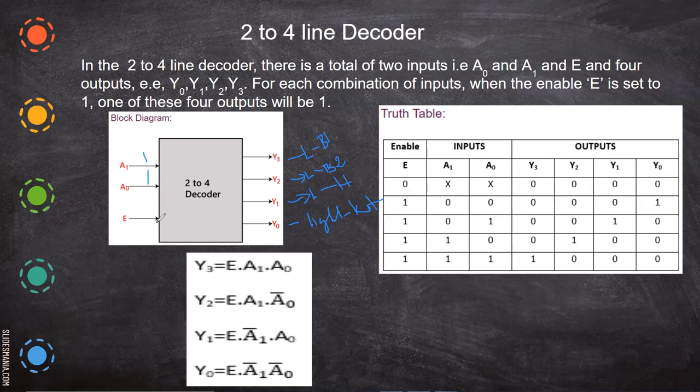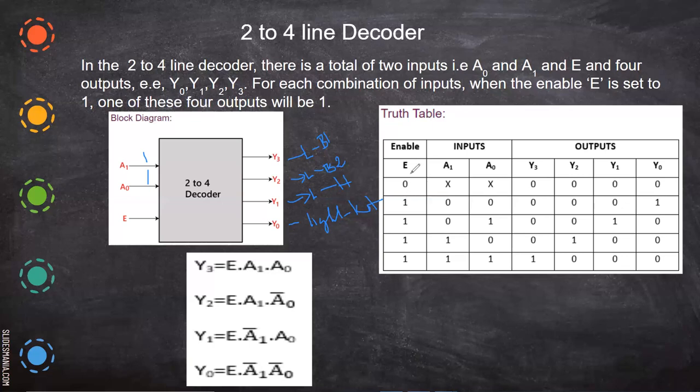So if you see the truth table, enable, already told you power should be there. That is equal to enable. If it is 0, whatever may be the A0 and A1, whatever may be the input, whether it is 1 or 0, that is why we have given X. X is for don't care condition. So whatever may be the input, there will be no output.